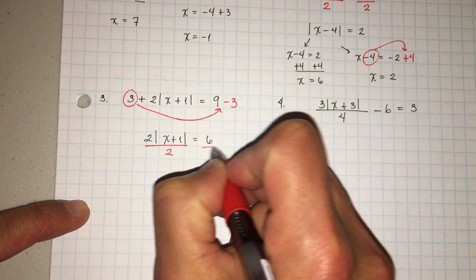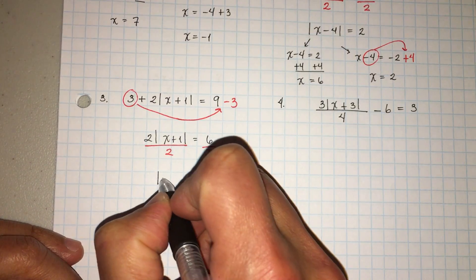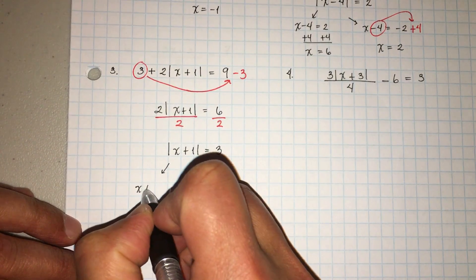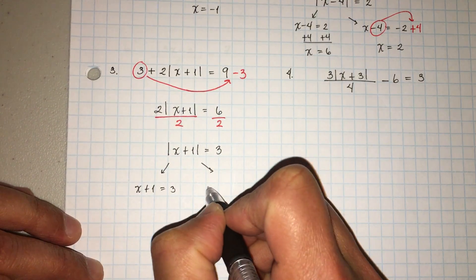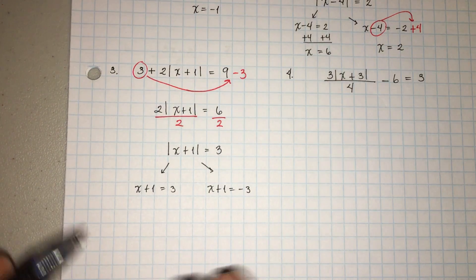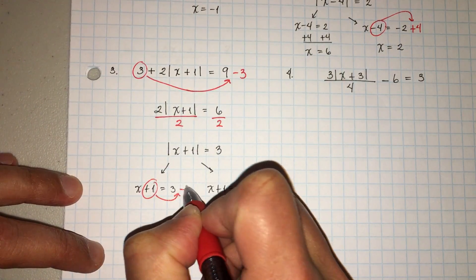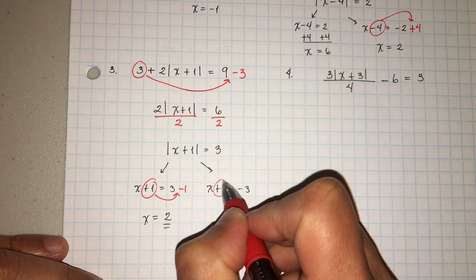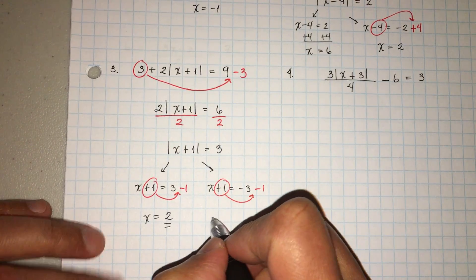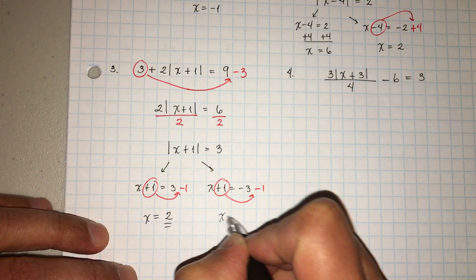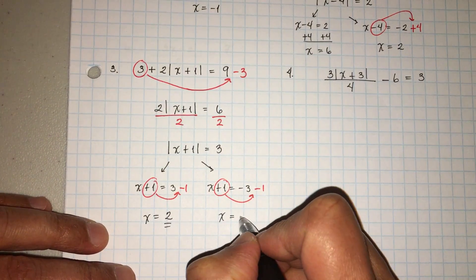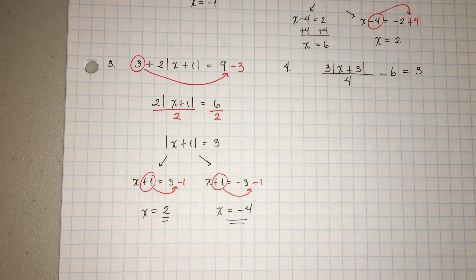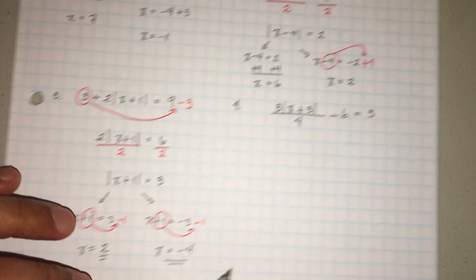Now the two is multiplying, so we're going to divide by two. Six divided by two is three. So we get the absolute value of x plus one is equal to three. Now that we've isolated it: x plus one is equal to three, and x plus one is equal to negative three. Solving: the positive one becomes a negative one on the other side. X is equal to three minus one, which is two. Now be careful — a lot of students think the other answer should be negative two, but negative three minus one gives you negative four.